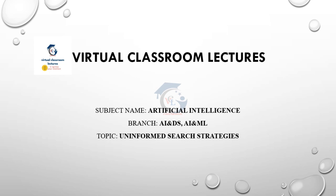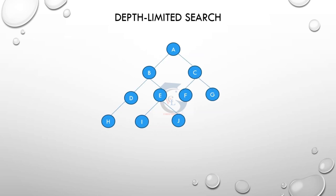Hi guys, welcome back to Virtual Classroom Lectures - it ignites your intellect. We are learning Artificial Intelligence for ABS and AML department. Today's topic is about uninformed search strategies. There are two types of search strategies: informed search and uninformed search. In uninformed search, we are going to learn BFS, DFS, uniform cost search, depth limited search, iterative deepening DFS, and bidirectional search. Last video covered BFS, uniform cost search, and DFS. Today we cover the remaining three strategies.